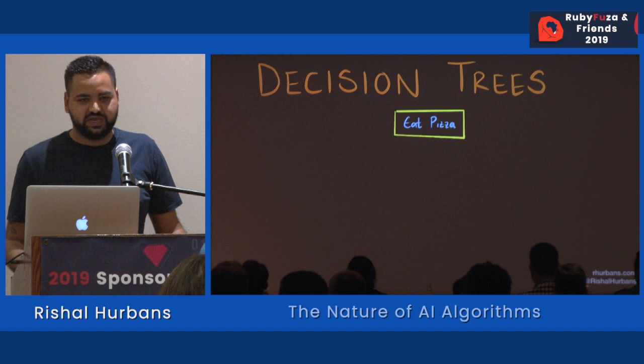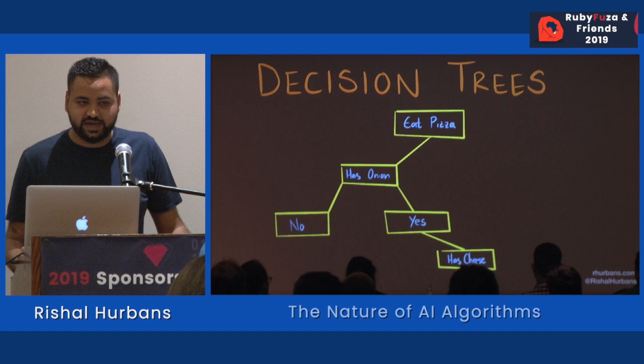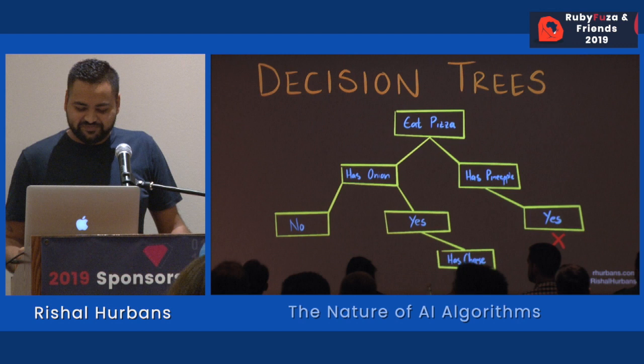Decision trees are still very useful. So if we had a decision — do we eat pizza? — we see in this path: does it have onions? No. Does it have onions? Yes. Does it have cheese? Maybe we like cheese and onion pizza, so we'll take that. Maybe on this path, does it have pineapple? Yes. Okay, we're not going to eat that pizza.